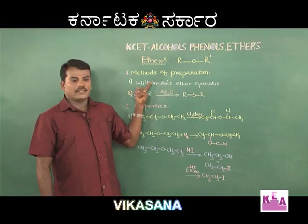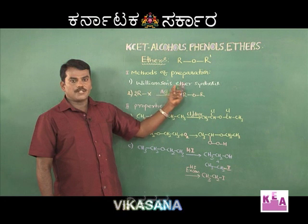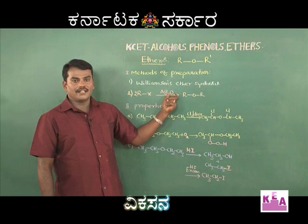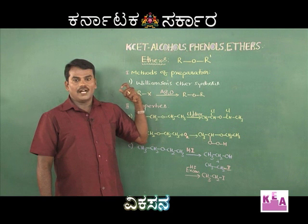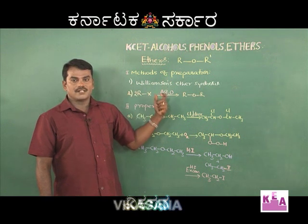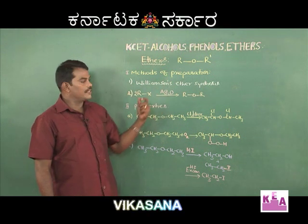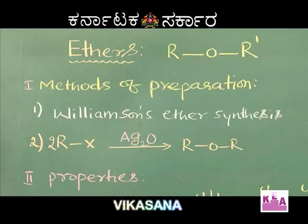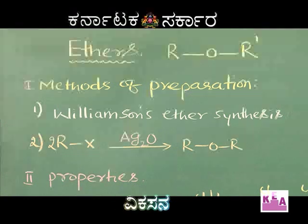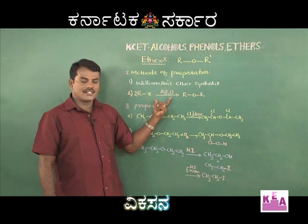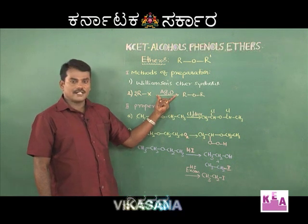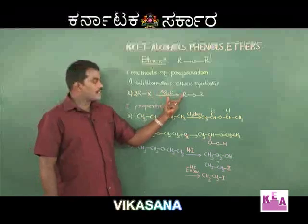The first and foremost method is Williamson's ether synthesis, which is very important as it is a named reaction. When sodium alkoxide is made to react with an alkyl halide, you get an ether. This reaction is called Williamson's ether synthesis. The second method is heating an alkyl halide with dry silver oxide, which also gives an ether.